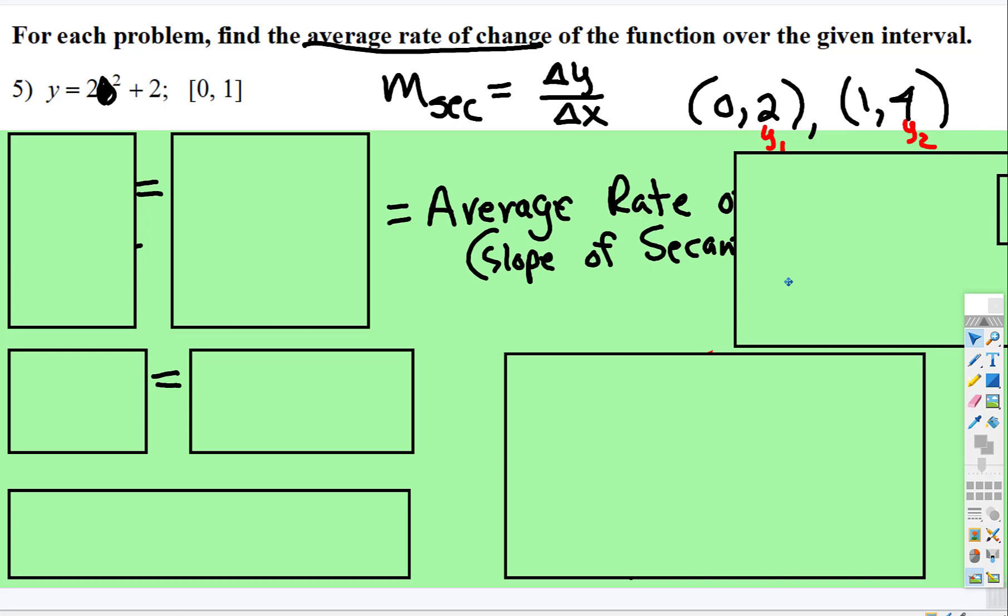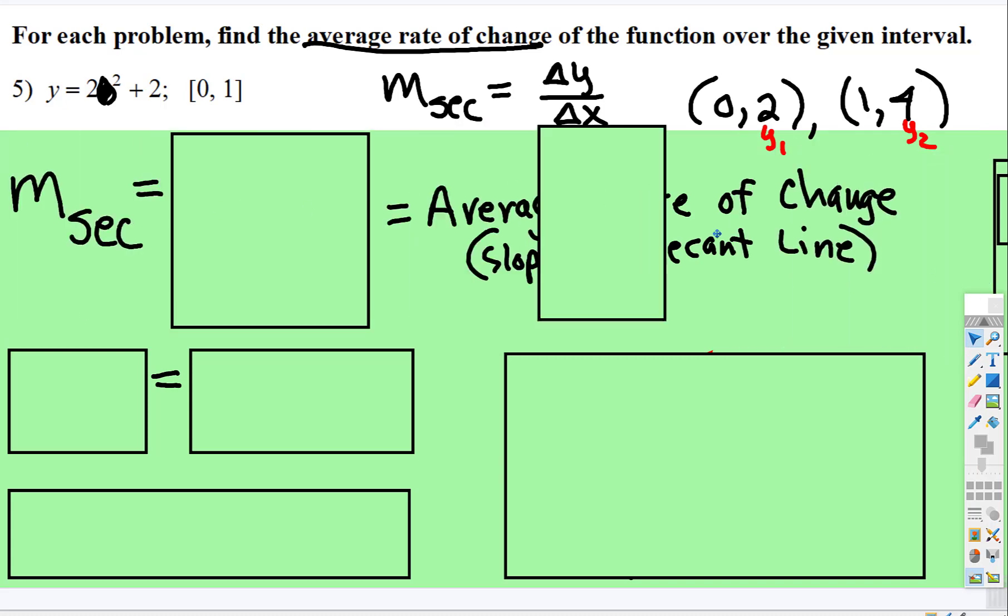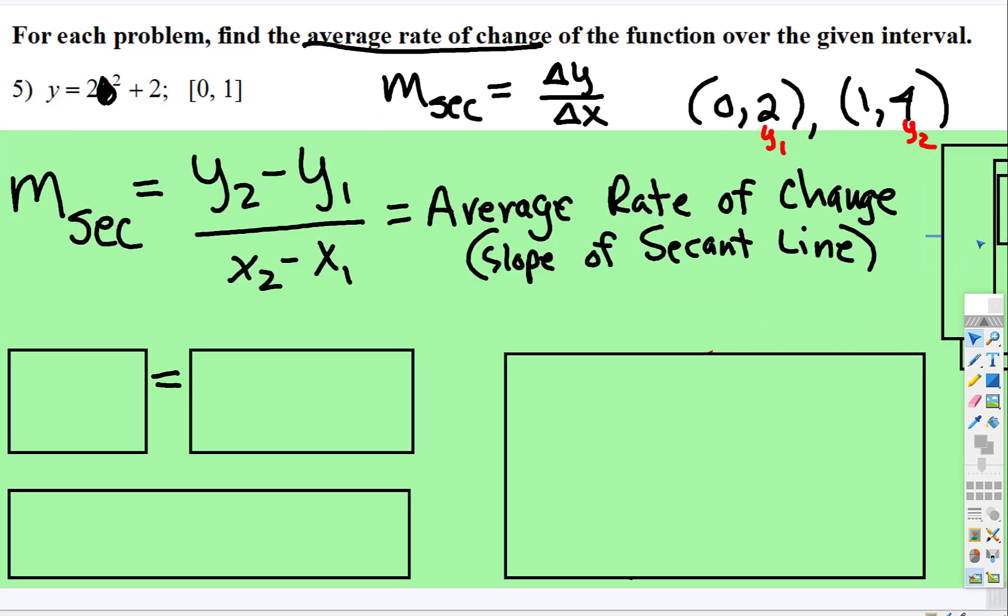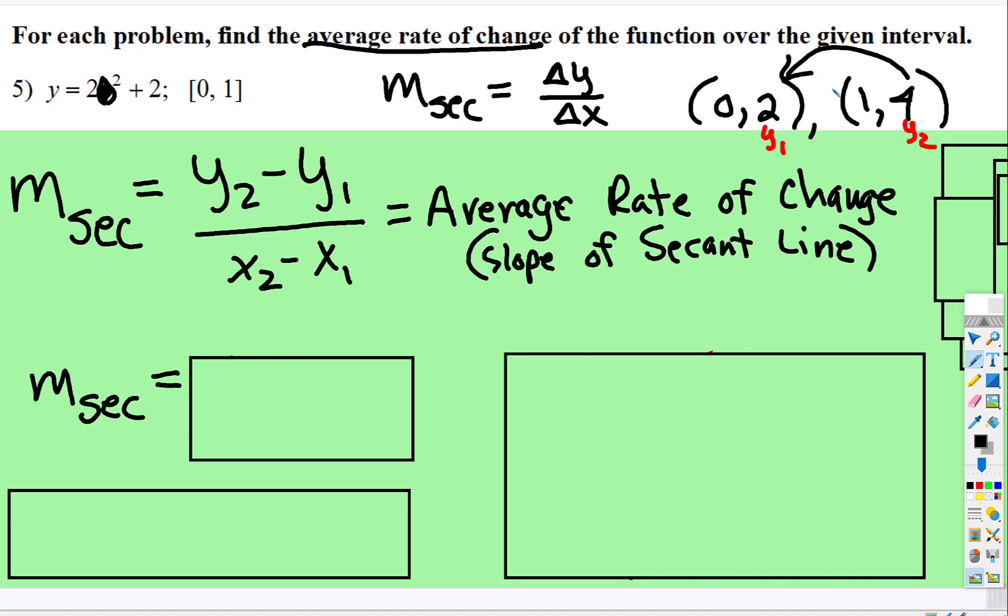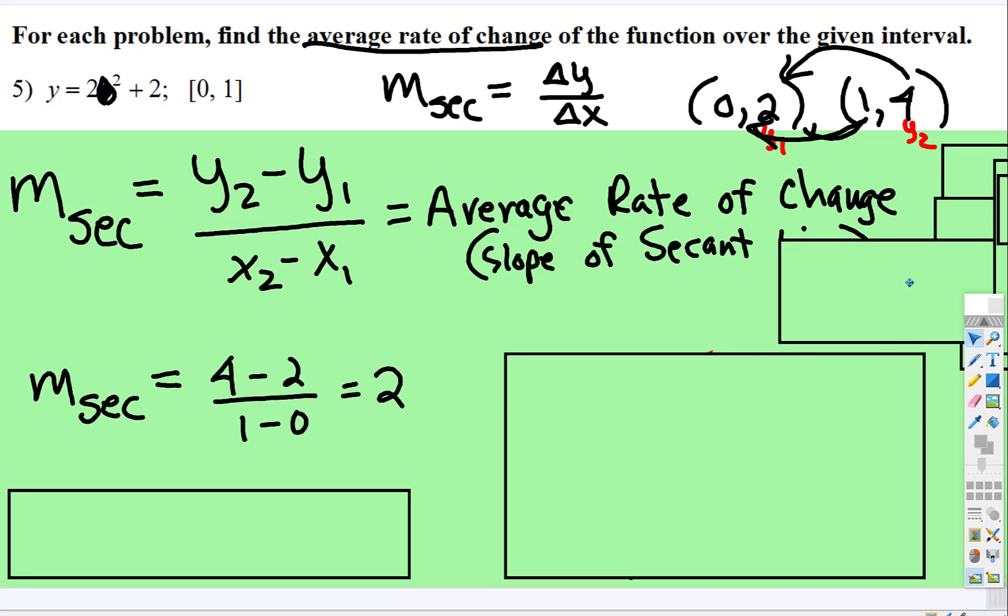And we're going to plug it in to the formula. So m secant is equal to y2, 4 subtract 2 over, oops, 1 subtract 0. I almost messed up. Just like that, 4 subtract 2 is 2, 1 subtract 0 is 1, 2 divided by 1 is 2.